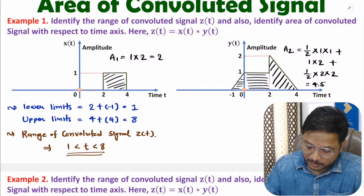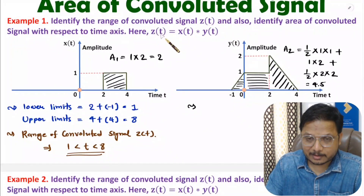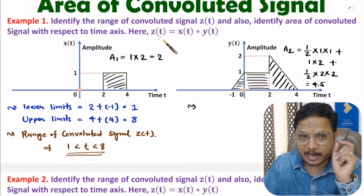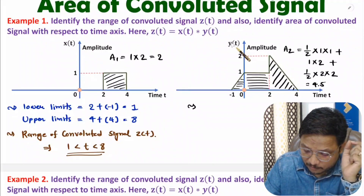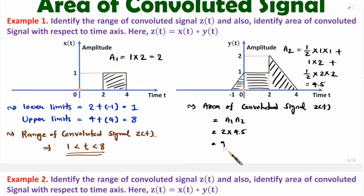Now we can find the total area covered by the convoluted signal, which is the multiplication of the area of X(t) and Y(t). So the area covered by convoluted signal Z(t) is A1 times A2, that is 2 times 4.5, which equals 9. So the area covered by the convoluted signal is 9 with respect to the time axis.